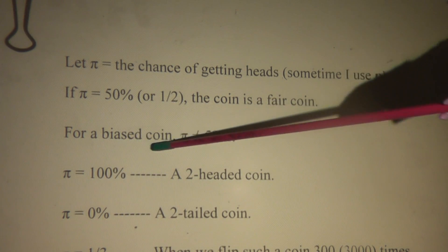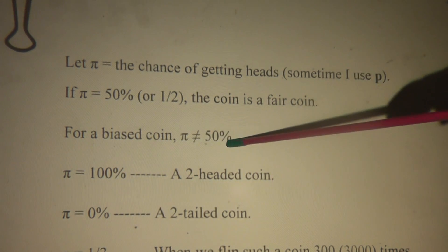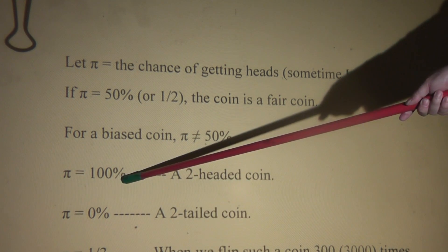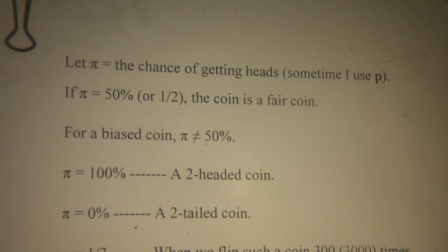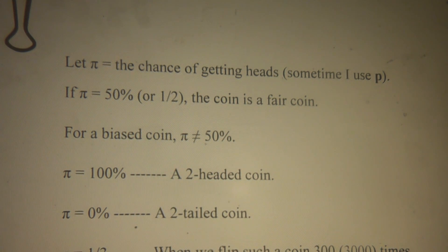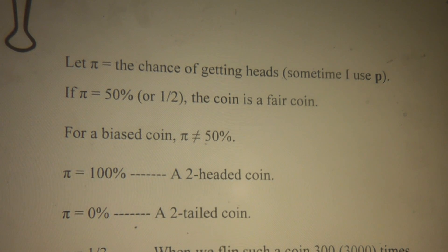When we say a bias coin, what does that mean? That means the chance of getting heads is not 50% — π is not equal to 50%. When π equals 100%, that is a two-headed coin. No matter how you flip it, you can only see heads, because it has heads on both sides. And when π equals 0%, this is what we call a two-tail coin. When you flip such a coin, no matter how you flip it, you can only see tails — no heads.